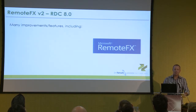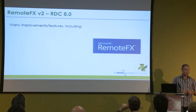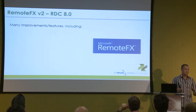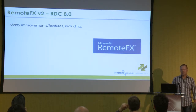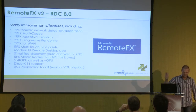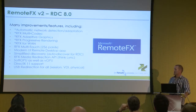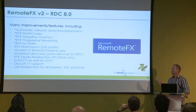So when we start to dip into the RDP 8 and RemoteFX 2 world, Microsoft is talking a heck of a lot more about it being suitable for WAN-based deployments. There were a ton of different improvements they rolled into this. I threw out a list here - I'm not going to talk about all of them, but I've got a few highlighted: multi-codec, adaptive graphics, progressive rendering - those first half dozen I'm going to spend some time on.